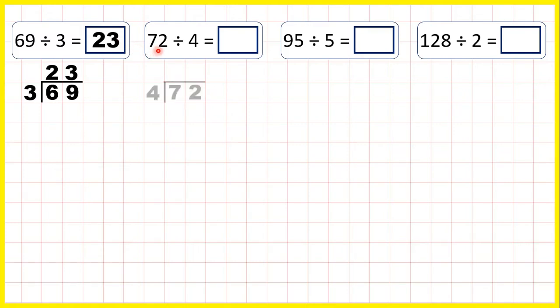Now 72 divided by 4. Taking the first digit, we have 7 divided by 4. Now 7 isn't in the 4 times table, which means we are going to have a remainder.